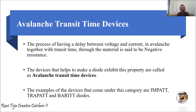Here also, the avalanche transit time devices discuss the same thing — the process of having a delay between voltage and current, as we have seen in the Gunn diode V-I characteristic. As the voltage increases, current also increases; at a particular point, as the voltage increases, current decreases. This delay between voltage and current, in the avalanche context with respect to transit time, can be said to be negative resistance.